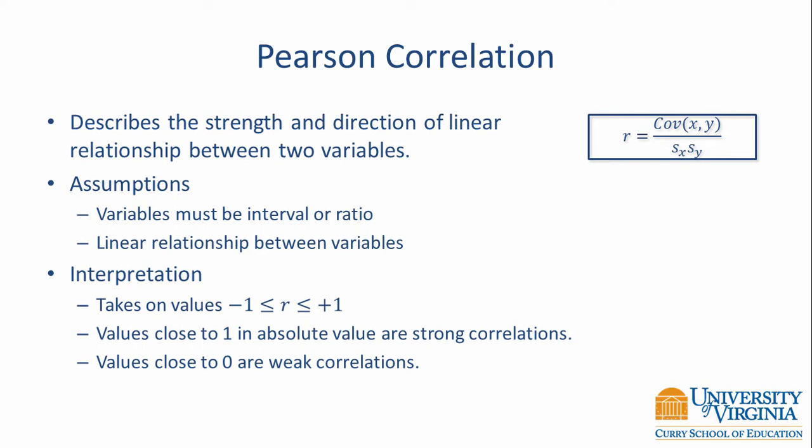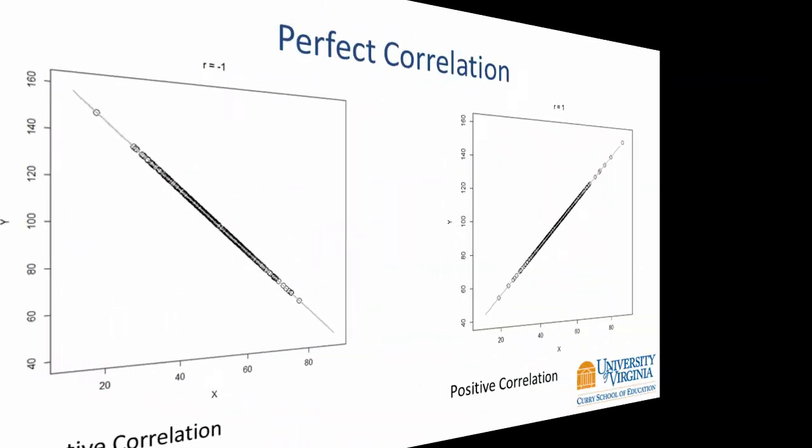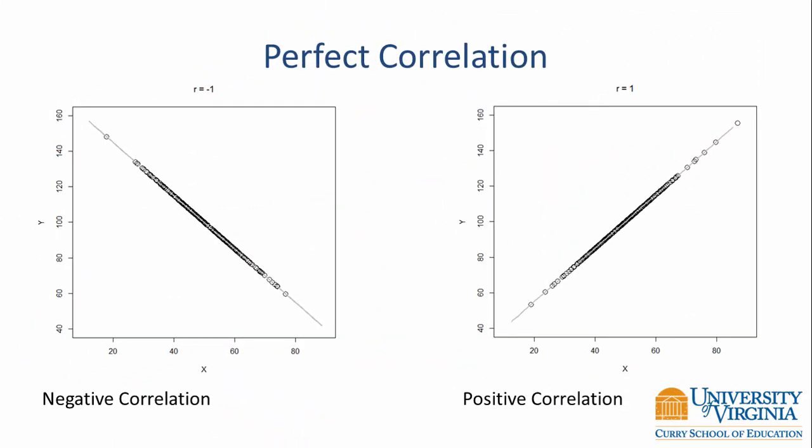Let's look at some plots to examine the relationship between the scatter plot and the correlation coefficient. Here we see two perfect correlations. On the left, we have a perfect negative correlation where r equals negative 1 — all points fall along a straight line sloping downward from left to right. On the right, there is a perfect positive correlation where all points fall along a straight line sloping upward from left to right.